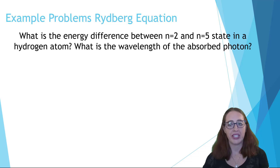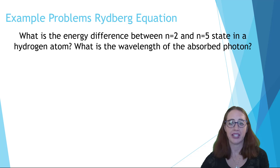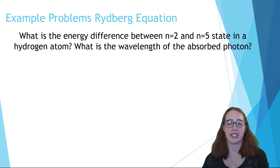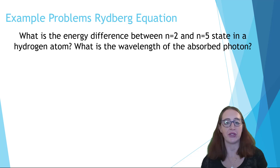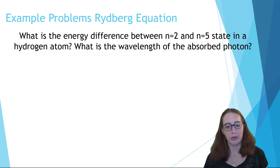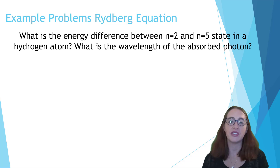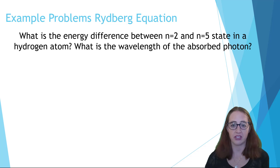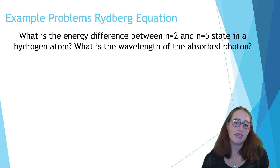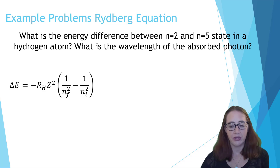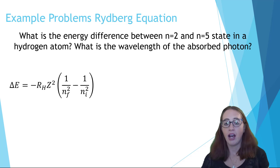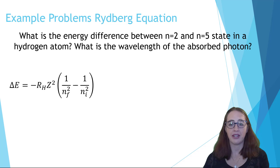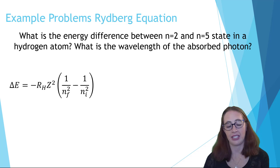Let's do an example where the electron transitions between the n=2 and n=5 state. This is a two-step problem: first solving for the energy, then using that energy to solve for the wavelength. Keep in mind most homework and exam problems won't walk you through both steps—you'll need to know that to get to the wavelength, you should go through the energy first. When using the version of the Rydberg equation with energy, we need to use Rh in joules. You can find that in the book, online, or on your exam formula sheet.